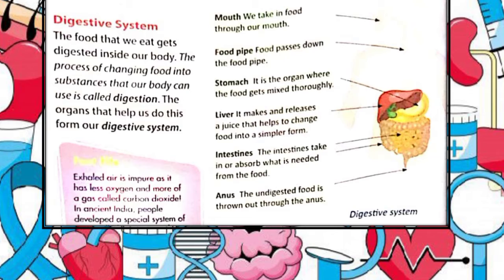Your tongue helps by pushing the food around while you chew. When you are ready to swallow, the tongue pushes a tiny bit of food towards the back of your throat and into the opening of your food pipe. The food pipe, or esophagus, is like a stretchy pipe about 10 inches (25 centimeters) long that moves food from the back of your throat to your stomach.